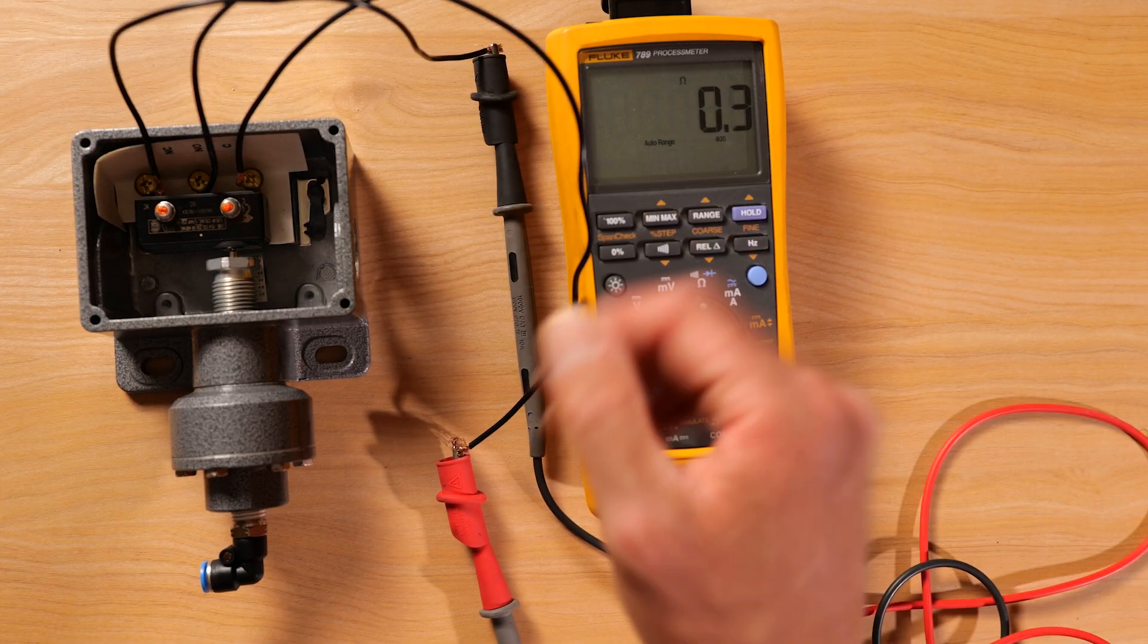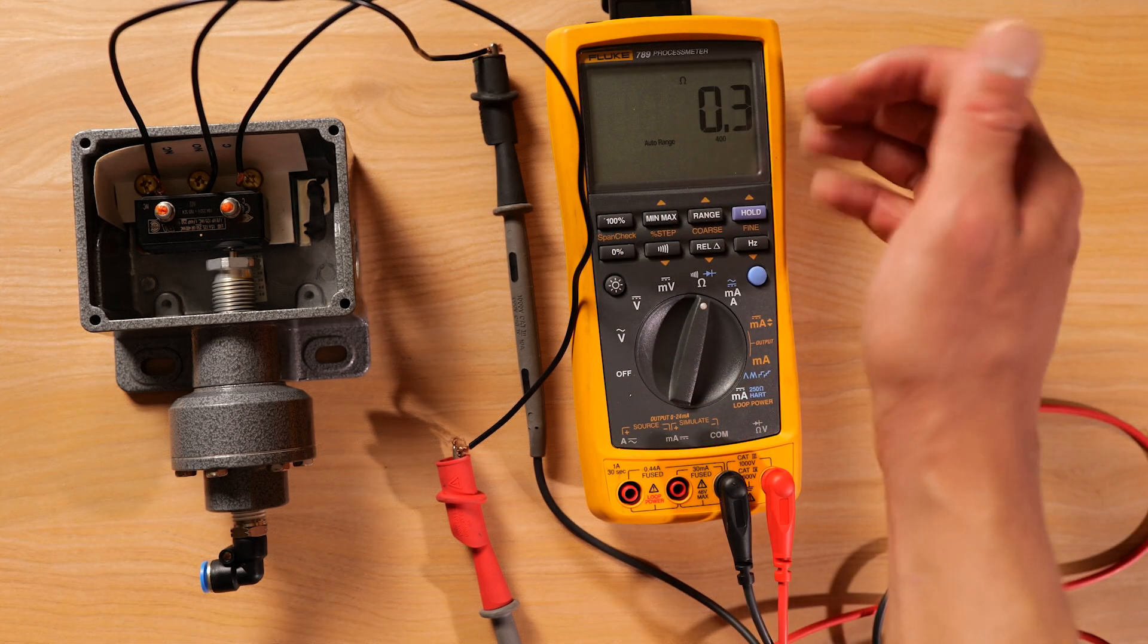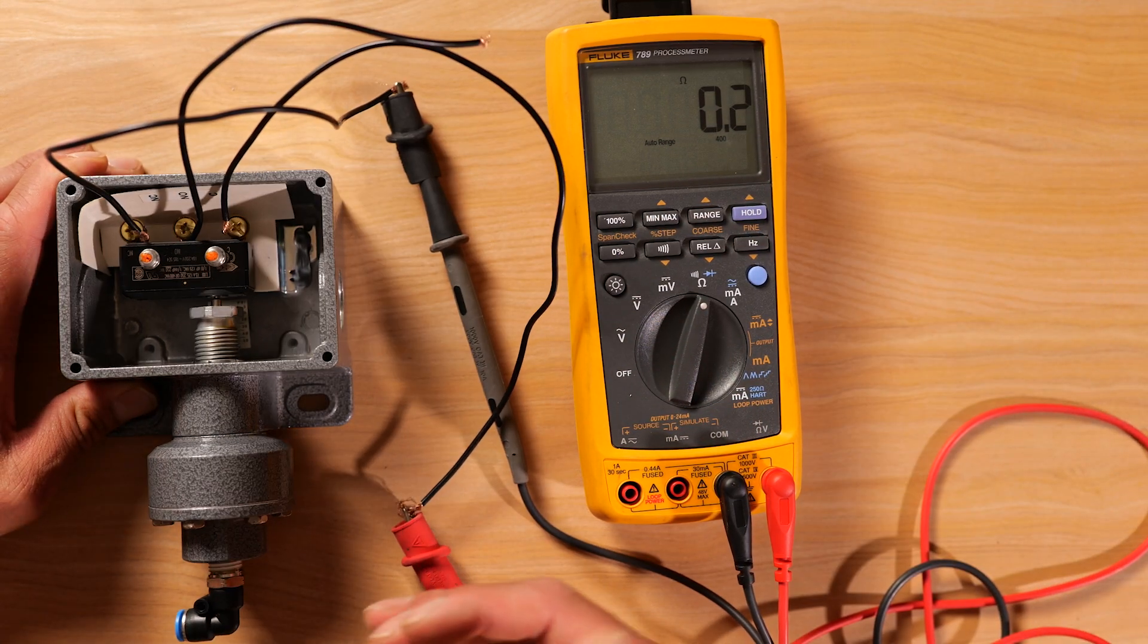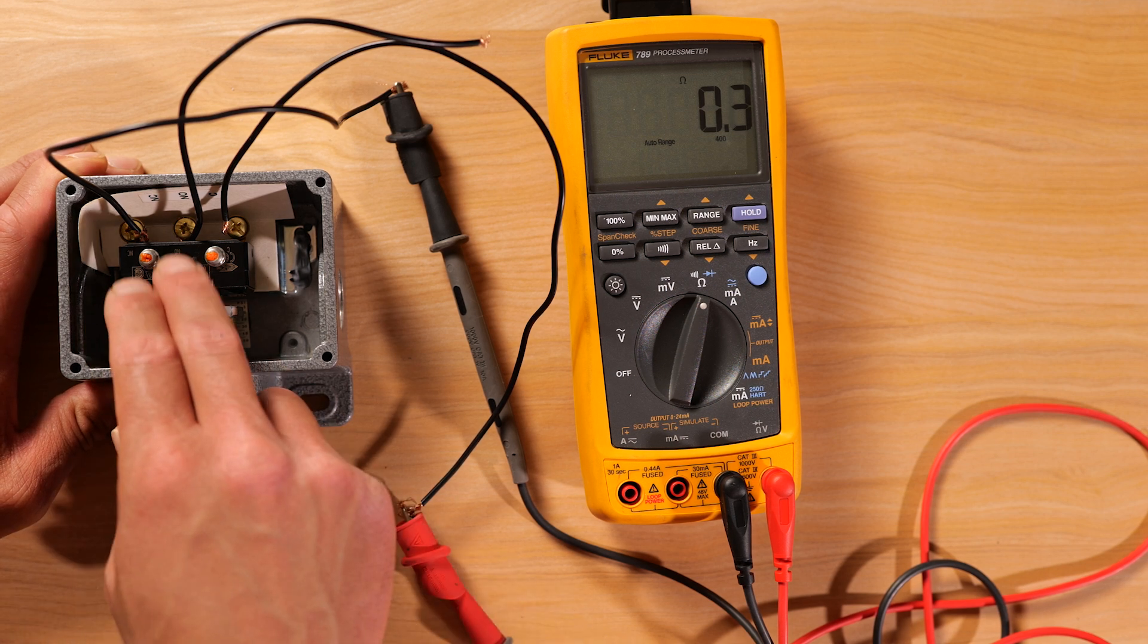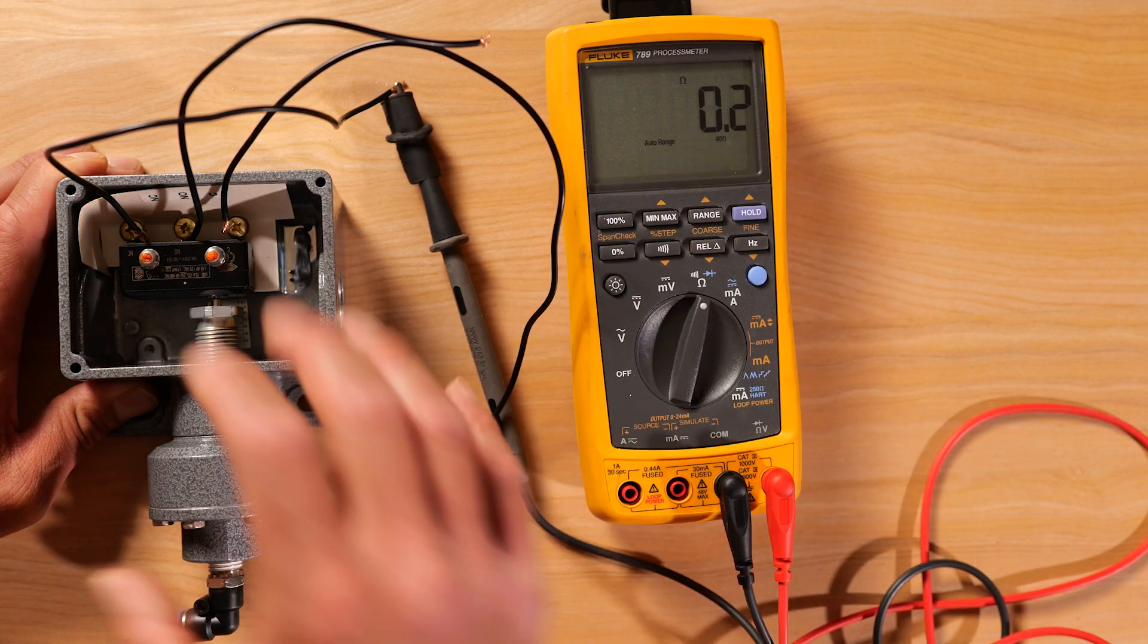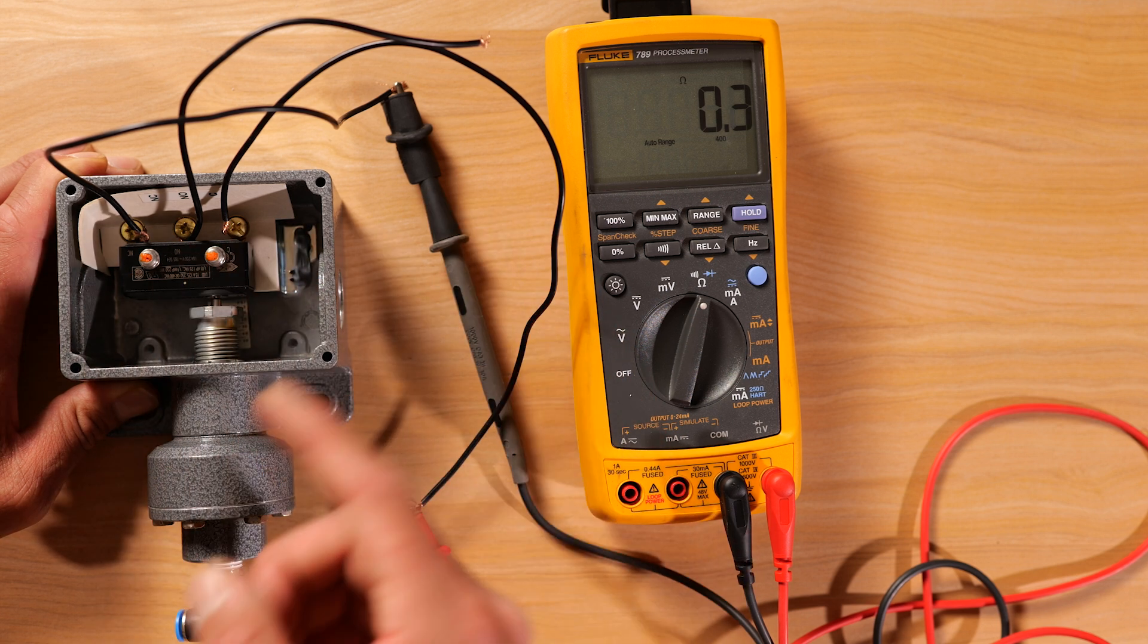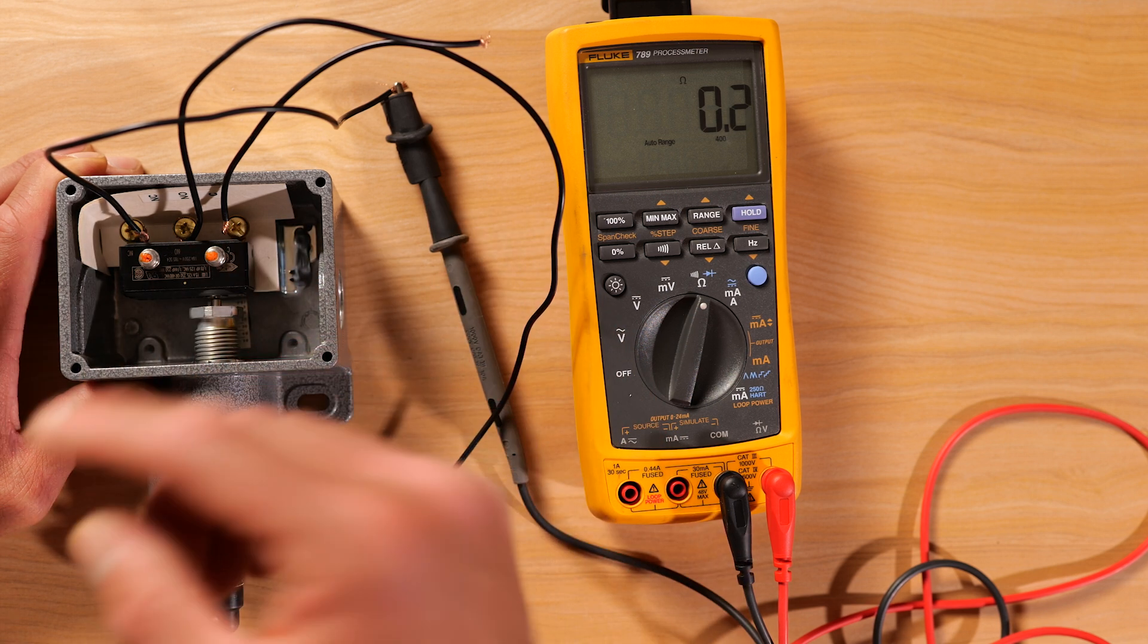And here you're showing continuity. So 0.3 ohms. So testing this for continuity, we're basically just testing the micro switch knowing that we have ohms. This tells us that we have an electrical path or a full electrical path to allow current to be able to flow through, right?